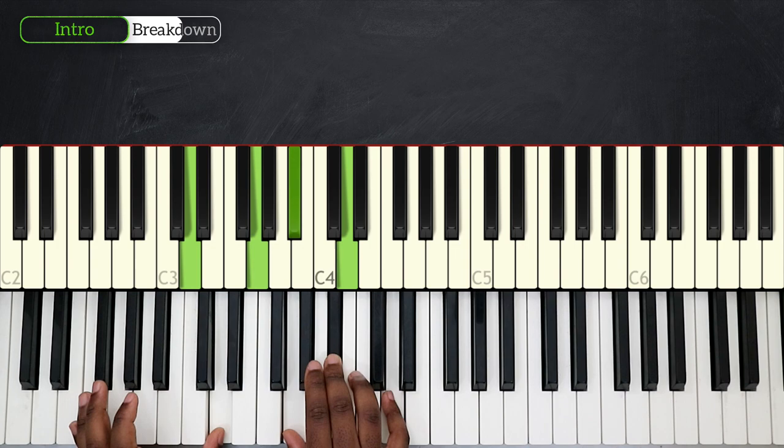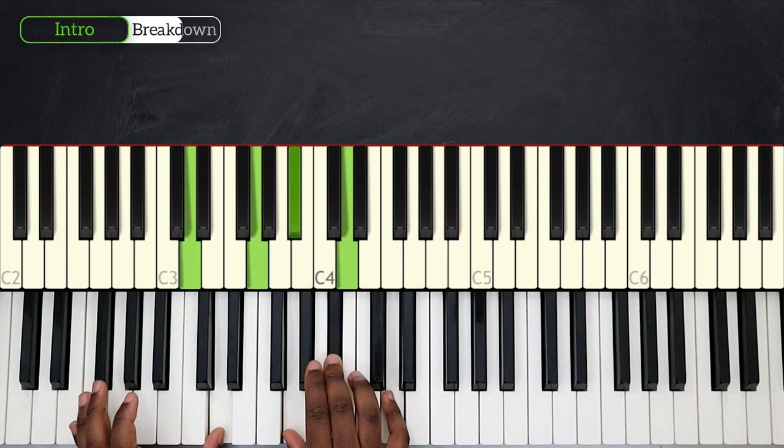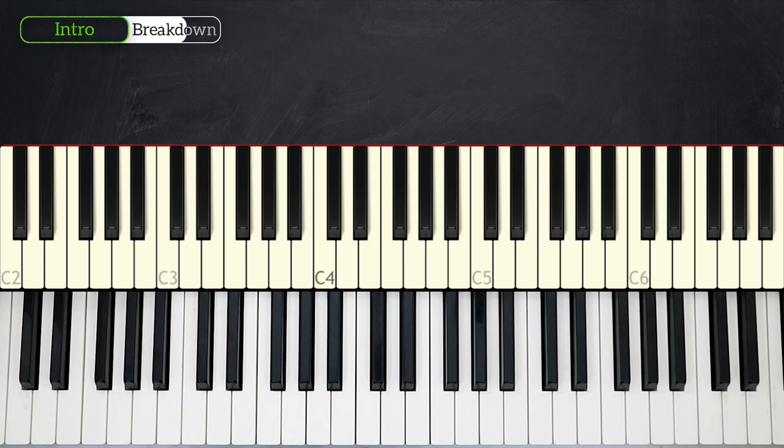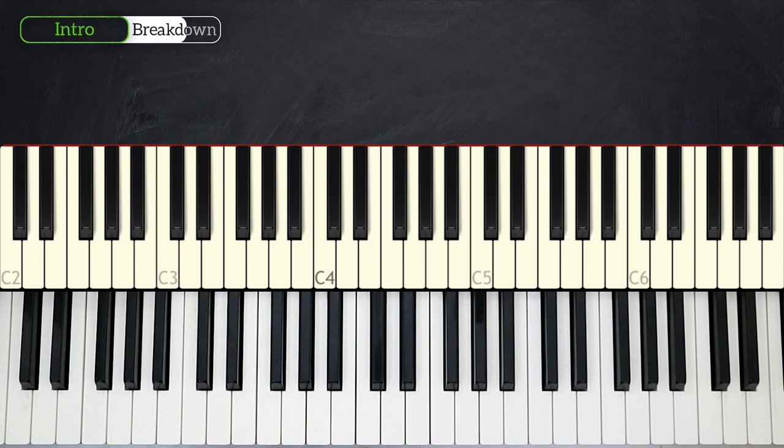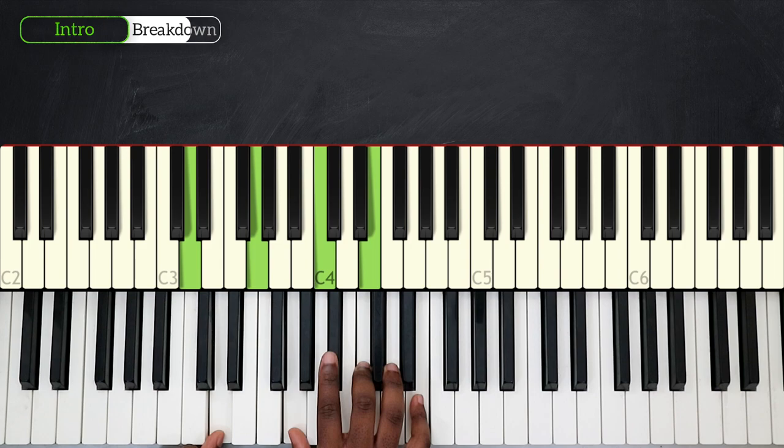Okay, so from G minor over D, D11, a quick F, and then you have your descending pattern. And then after that, we're going to go back on our D11 chord. And then we play the descending pattern again.